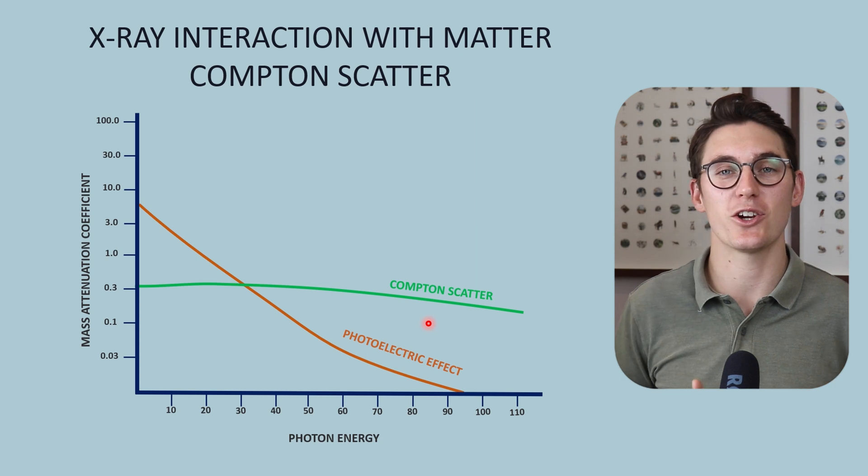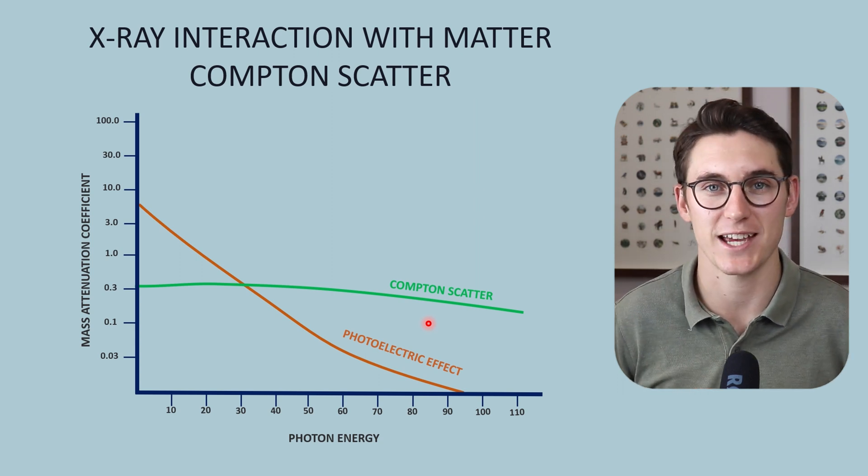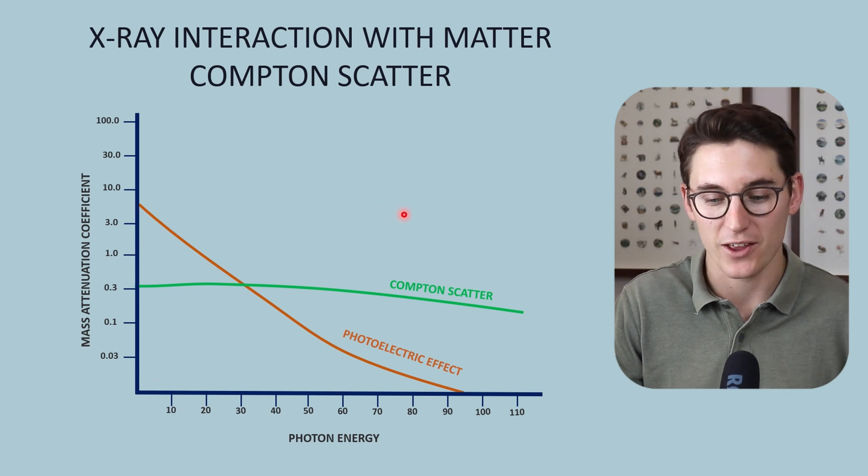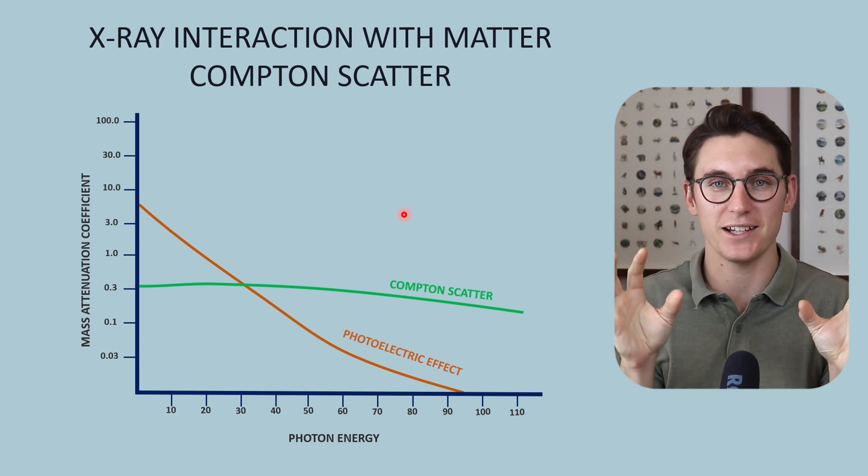The last interaction we're going to look at is called Rayleigh scatter, or elastic or coherent scatter, that occurs largely at lower than diagnostic energy ranges. Compton scatter and photoelectric effect are two concepts you need to have clearly in your mind.